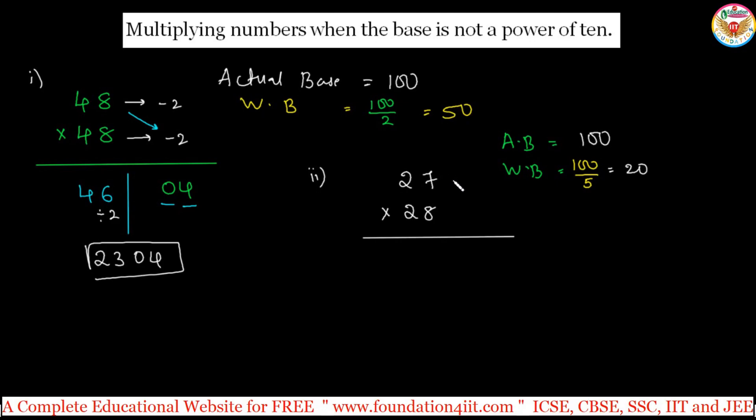Now let us take 20 as the main base. You can start the sum. 27 is 7 more, and this is 8 more compared to 20 as the base. Same pattern: 7 into 8 is 56, and 27 plus 8 is 35.